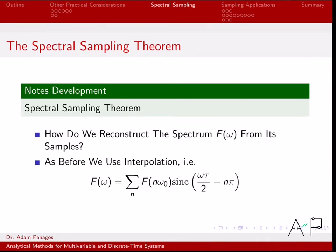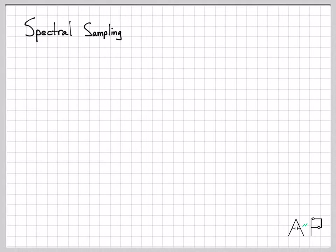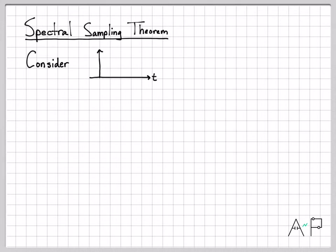We'll be able to take samples of a spectrum in the frequency domain and perfectly reconstruct the time domain signal from those samples of the spectrum — very similar in concept, just a little bit different. So this is what we want to derive: the spectral sampling theorem, which will let us reconstruct the original continuous time signal from those samples using interpolation, just like we've done before.